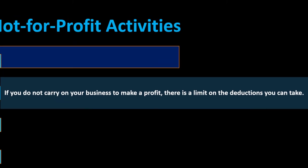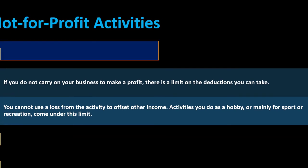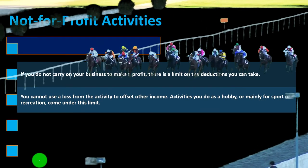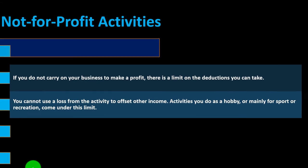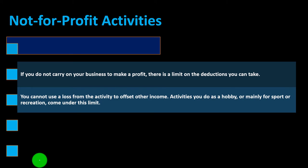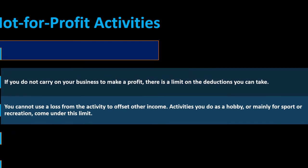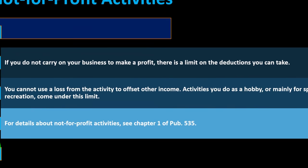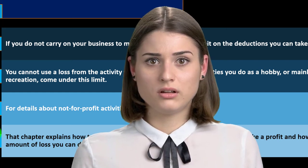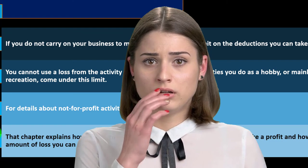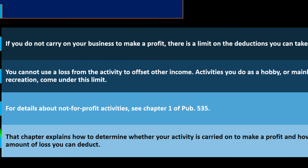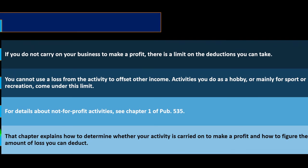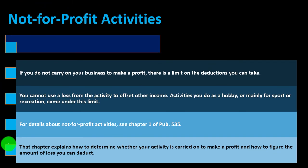Regarding not-for-profit activities: if you do not carry on your business to make a profit, there is a limit on the deductions you can take. You cannot use a loss from the activity to offset other income. If it's a hobby, the income is reported as other income — not on Schedule C — and deductions, if any, may be limited to the amount of income from that activity. Activities done mainly for sport or recreation come under this limit. For details about not-for-profit activities, see Chapter 1 of Publication 535, which explains how to determine whether your activity is carried on to make a profit and how to figure the amount of loss you can deduct.